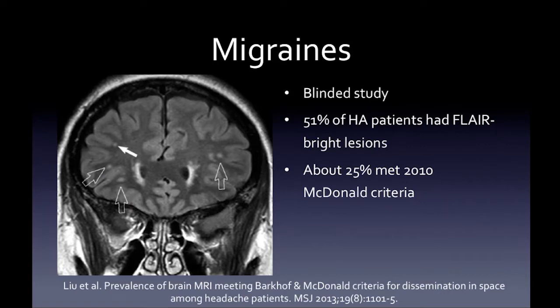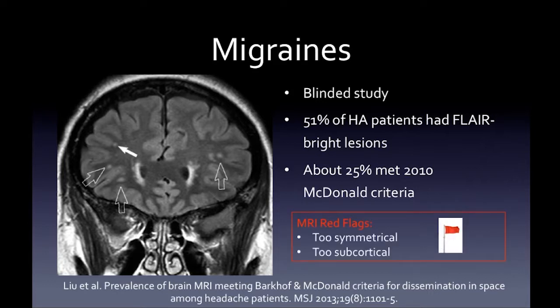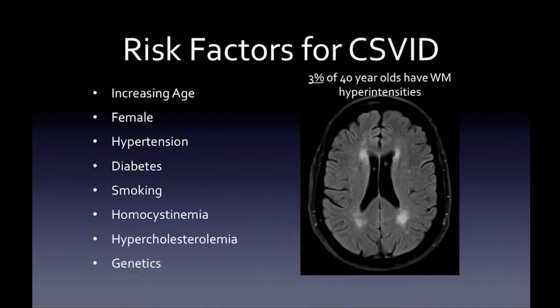In a blinded 2013 study, 51% of headache patients had FLAIR-bright lesions, and about 25% met the old McDonald criteria. The red flag here: these white matter lesions are too symmetrical and too subcortical — not very specific for MS or demyelinating disease. They are not very specific for MS or demyelinating disease.